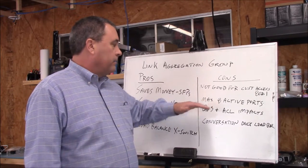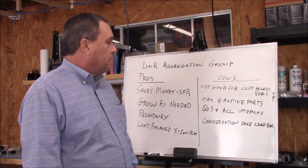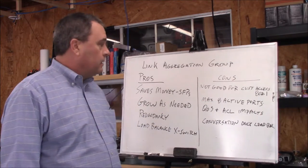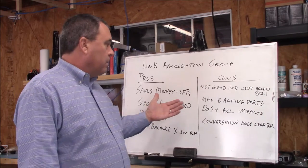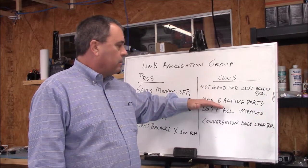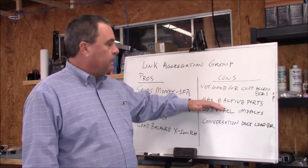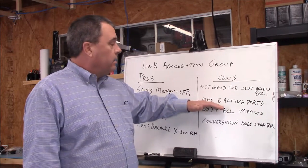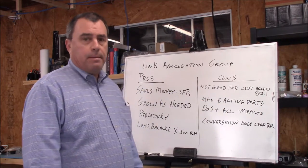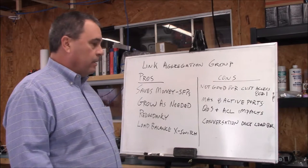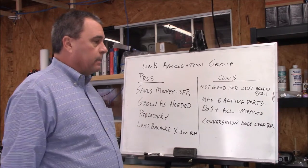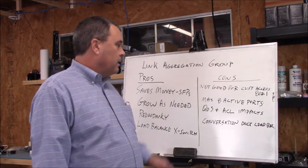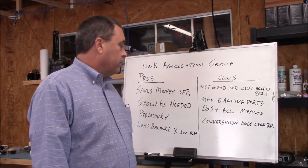There's also the limitation that you can only have a max of eight active ports. The Cisco switch supports 16 links, but it will only keep eight active at the same time. The others go to standby, and if some actives fail, it moves traffic to the standby ones.